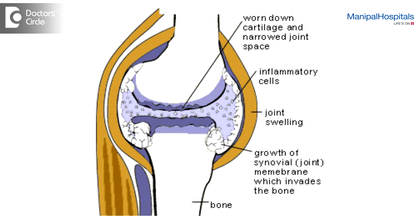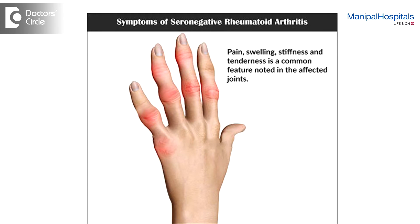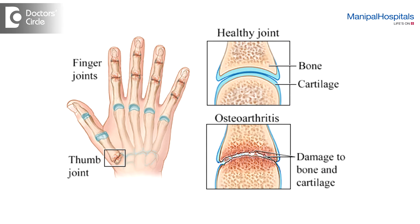there is basically inflammation in the joints. Rheumatoid arthritis and seronegative spondyloarthritis are some of the examples. In degenerative arthritis, there is wear and tear of the joints. Osteoarthritis is an example of degenerative arthritis.